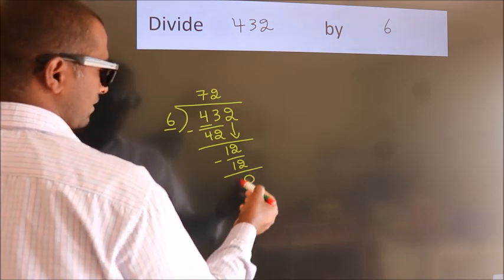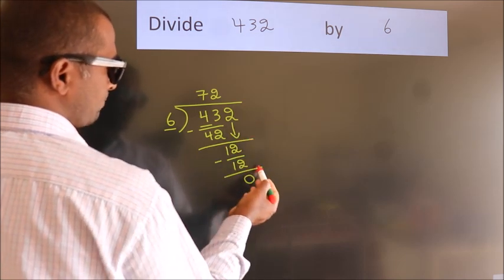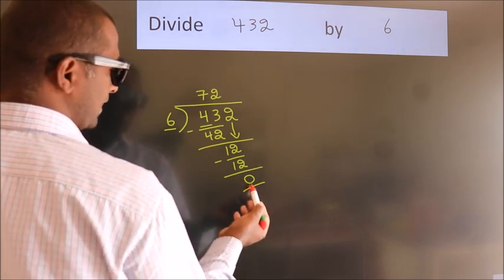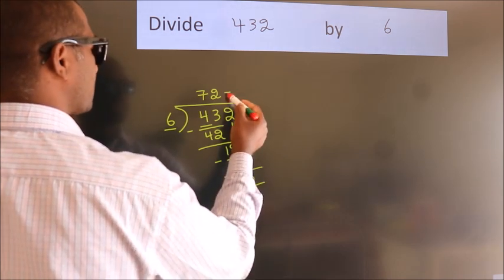After this, no more numbers to bring down. And we got remainder 0. So this is our quotient.